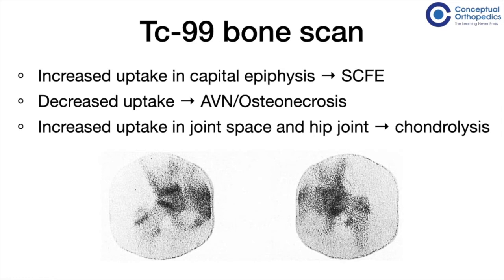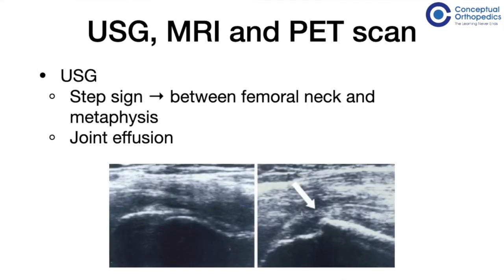Technetium-99 bone scans have also been used. Increased uptake in the capital epiphysis indicates slipped capital femoral epiphysis, whereas decreased uptake indicates AVN or osteonecrosis of the capital femoral epiphysis. Increased uptake in the hip joint — both in the joint space and on the femoral head and acetabular side — indicates the presence of chondrolysis.